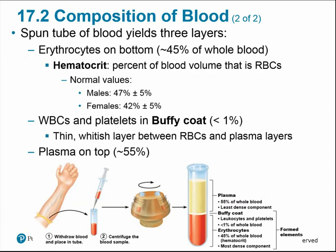If we spin a tube of blood, it separates into three layers. The heavier red blood cells sink to the bottom, making up about 45% of whole blood volume — this is called the hematocrit. The white blood cells and platelets form a narrow buffy coat in the center, making up less than 1% of whole blood volume. Plasma floats to the top as the least dense component, making up about 55% of blood volume.